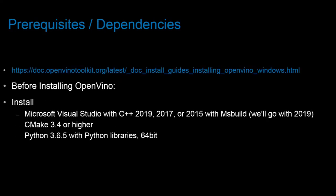Before we install the OpenVINO toolkit, there are a few dependencies we want to install first to ensure our system smoothly runs pre-trained AI models. Those dependencies are Microsoft Visual Studio with C++, CMake, and Python.